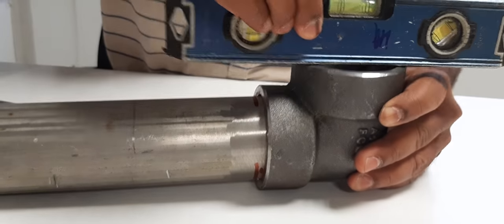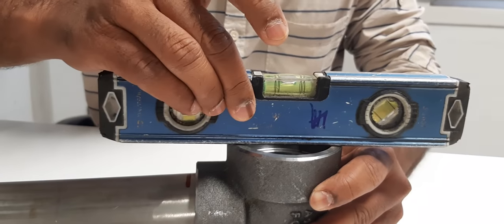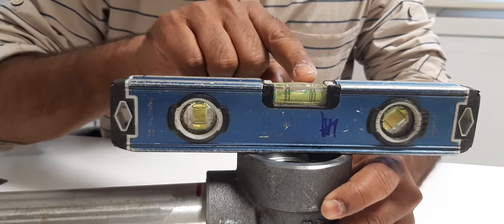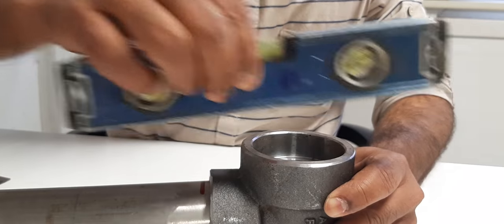We have to check the 90 degrees from the level, should be zero, and then the elbow on pipe.